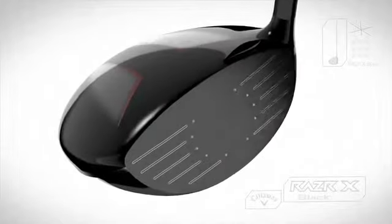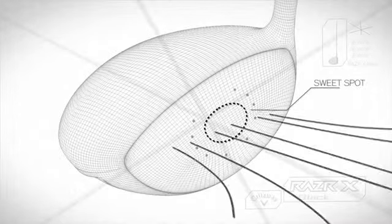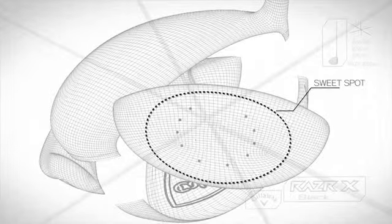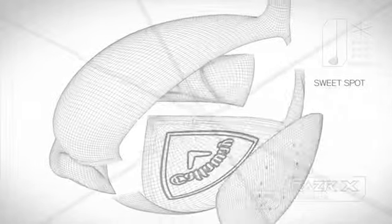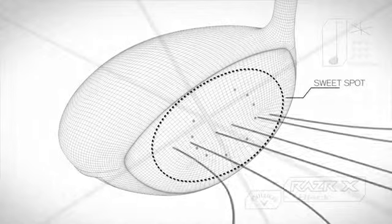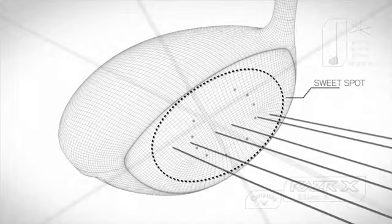The Speed Frame Face that we've put into the Razr X Black driver is a new face pattern that optimizes speed on off-center hits, so we can maintain ball speed when you move away from the center.